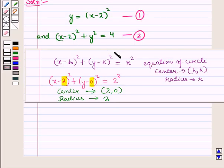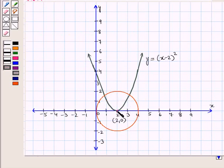Let us draw its graph, which will be a circle with center (2,0) and radius 2 units. This is the graph of the second equation.